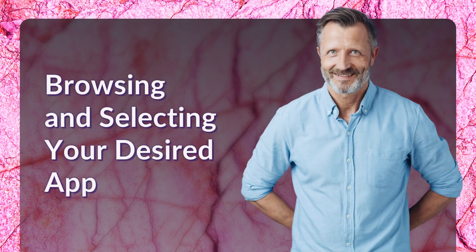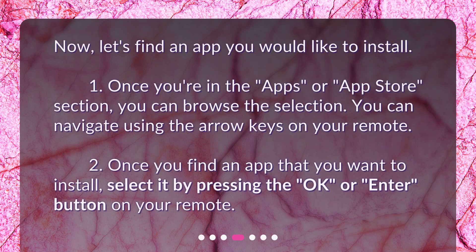Browsing and selecting your desired app. Now, let's find an app you would like to install. 1. Once you're in the Apps or App Store section, you can browse the selection. You can navigate using the arrow keys on your remote. 2. Once you find an app that you want to install, select it by pressing the OK or Enter button on your remote.